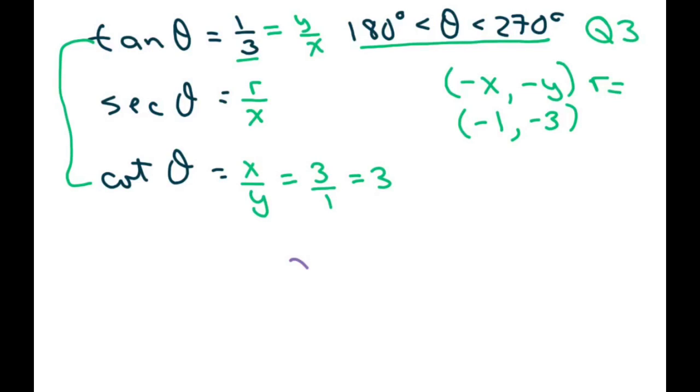To get my r, I'm going to use x squared plus y squared equals r squared. So we get 3 squared plus 1 squared equals r squared. So 10 equals r squared. So r is going to be, when you take the square root of both sides, square root of 10. And r is always positive.